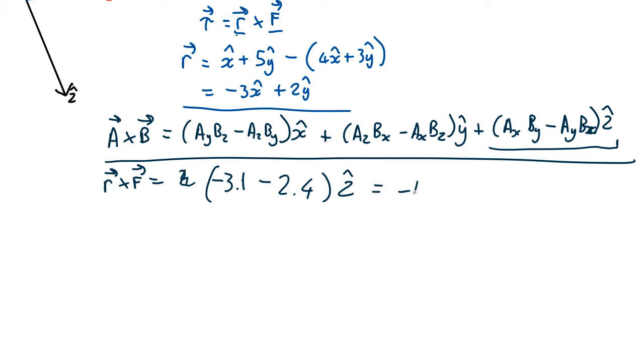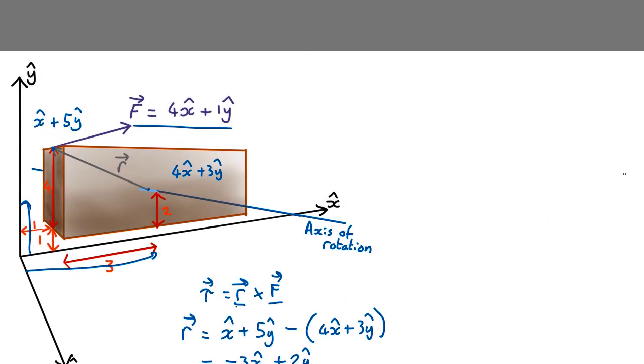Which comes out as minus 11z. So it means the torque is pointing in the minus z direction and is quite strong. Is that correct? Well we can check using the right hand rule.